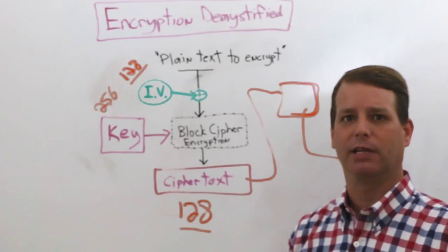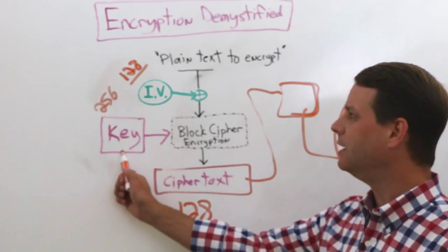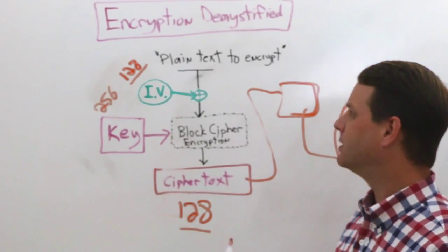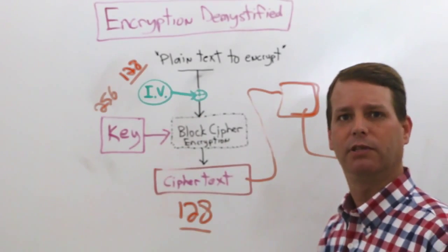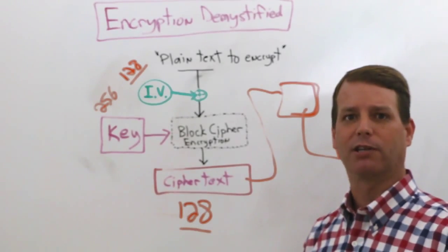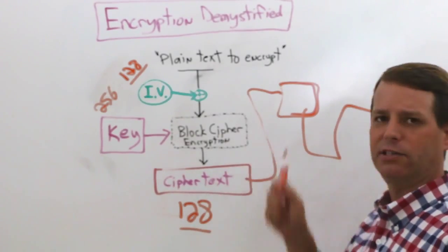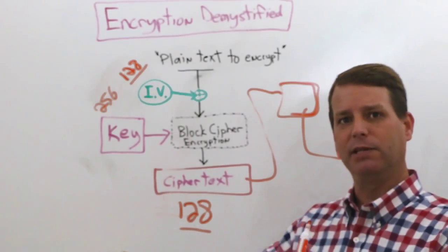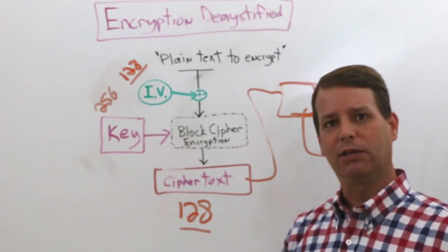Now the decryption process happens in reverse. I'm going to still need my key to do the decryption. I'm going to take the initialization vector that I used to start this process, and I'm going to work on the first block cipher. Once I've decrypted that block cipher, I'm going to work on the next block cipher. I decrypt all the pieces in order, I end up with decrypted text.